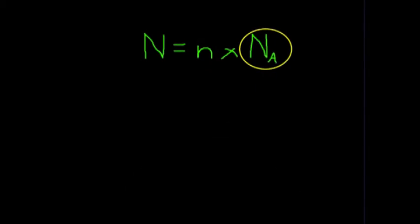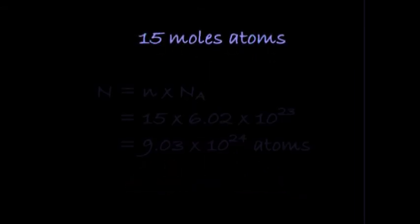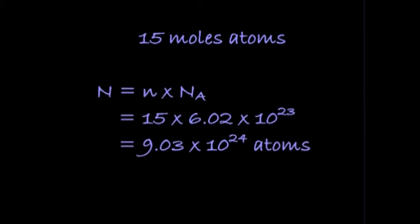You can write the formula in a triangle if this helps. So, with 15 moles of atoms, you multiply by 6.02 times 10 to the 23 to get 9.03 times 10 to the 24 atoms.